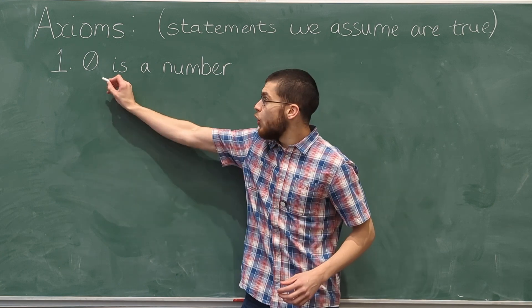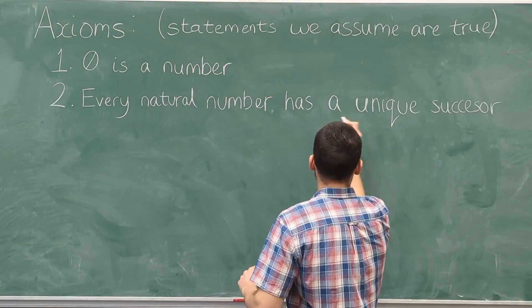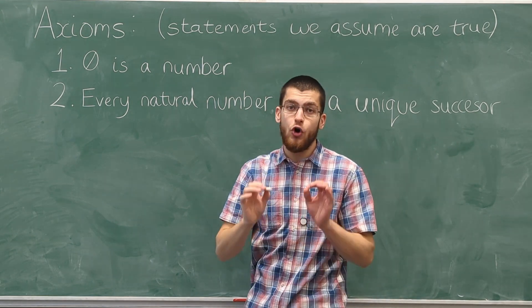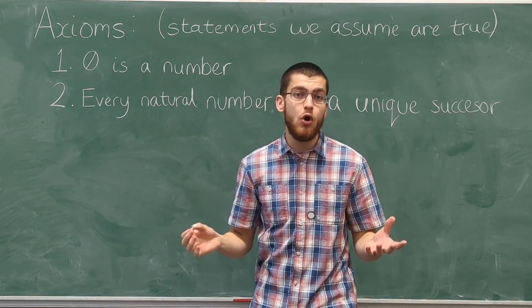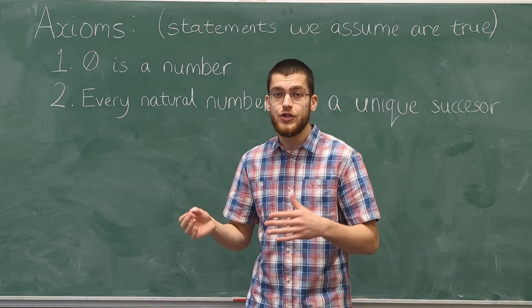First axiom, zero is a number. Second, every natural number has a unique successor, which is also a natural number. The successor of zero is one, the successor of one is two, and so on.